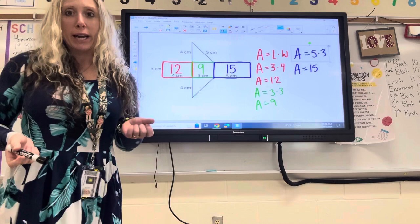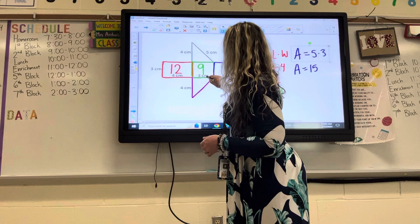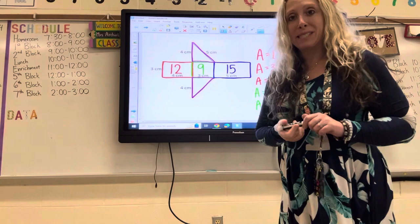Now, in any triangular prism both triangles are always equal, so I really only have to find the area of one of them — that'll tell me the area of both. I'm going to use the same color to highlight my two triangles since they're both the same.